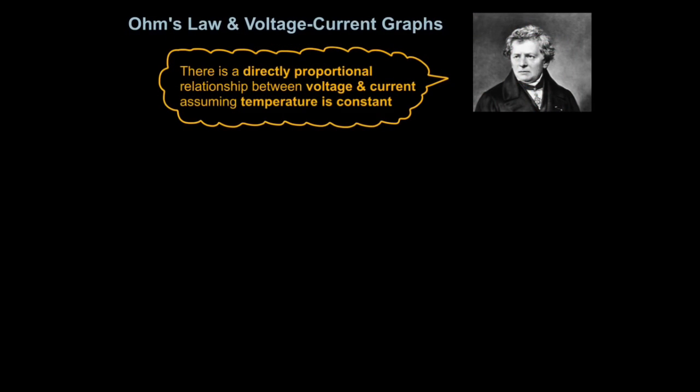So now we're going to look at Ohm's law and voltage current graphs. George Ohm was a German physicist and mathematician who realized there's a relationship between resistance, voltage, and current, and he linked them together in a principle called Ohm's law. What Ohm's law teaches us is there is a directly proportional relationship between voltage and current, assuming that temperature in a circuit is constant. You can test Ohm's law pretty easily.